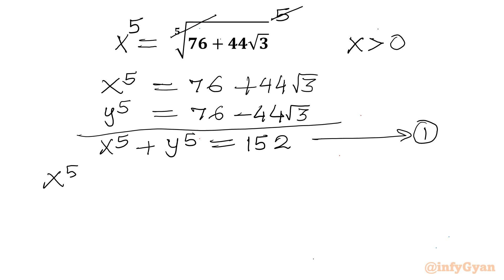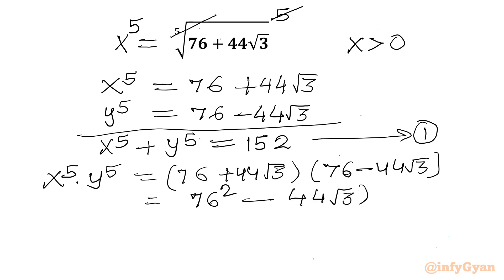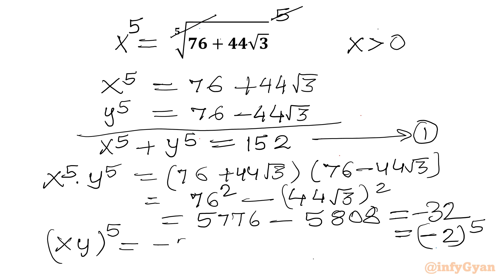Now let's check the product: x power 5 times y power 5 equals (76 plus 44 root 3)(76 minus 44 root 3). Using the identity (a+b)(a-b), this is 76 squared minus (44 root 3) squared, which gives 5776 minus 5808, so minus 32, which I can write as minus 2 whole power 5. So the left hand side is (xy) power 5 and the right hand side is (-2) power 5. After taking the fifth root of both sides we get equation number 2: xy equals negative 2.